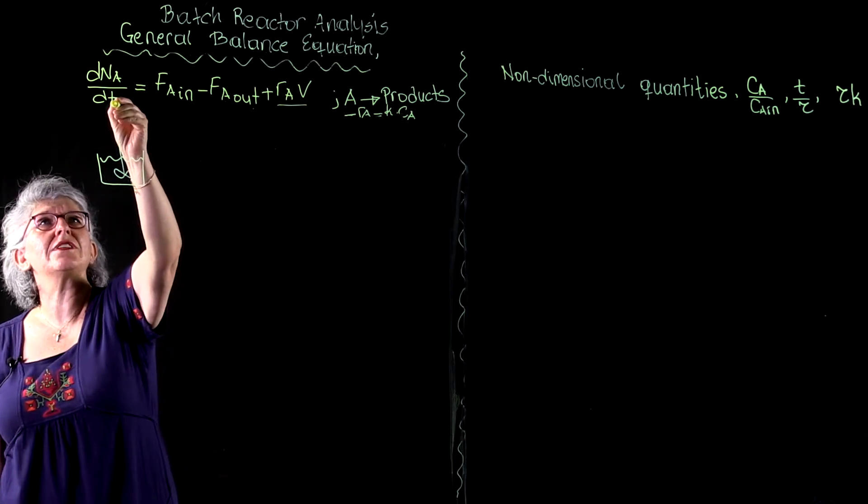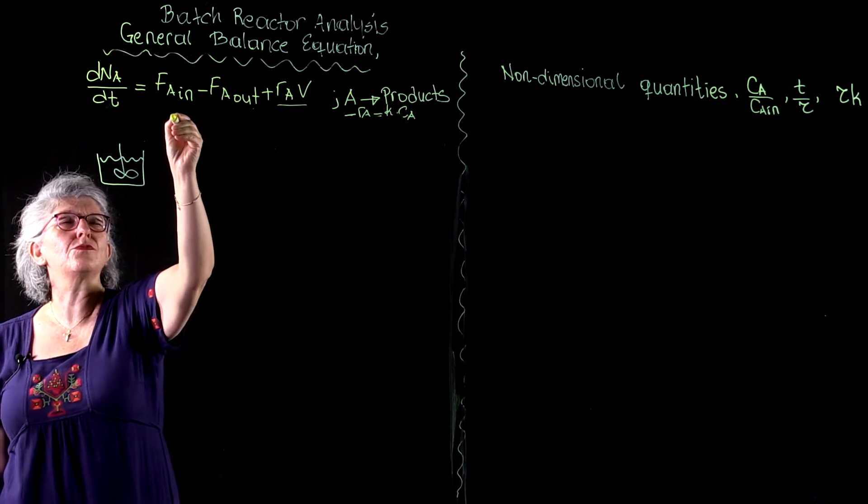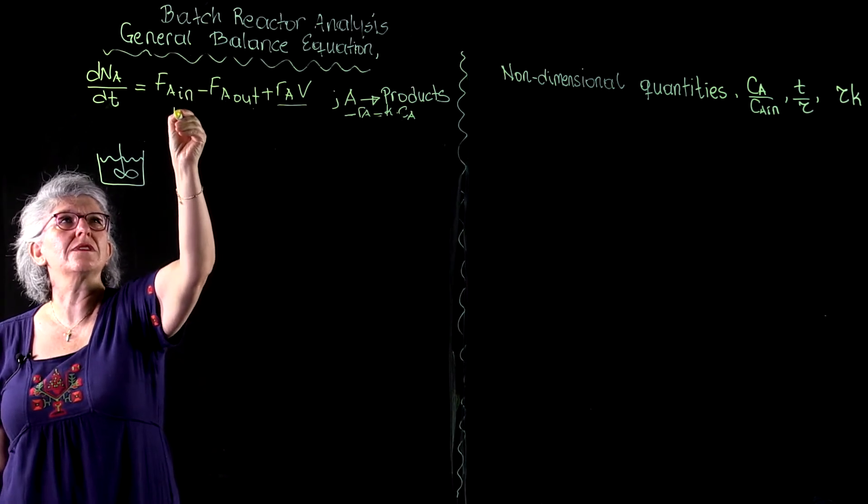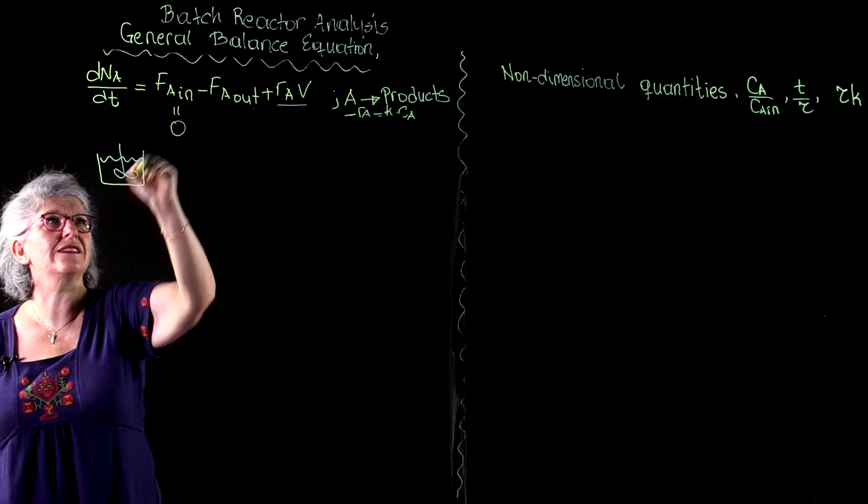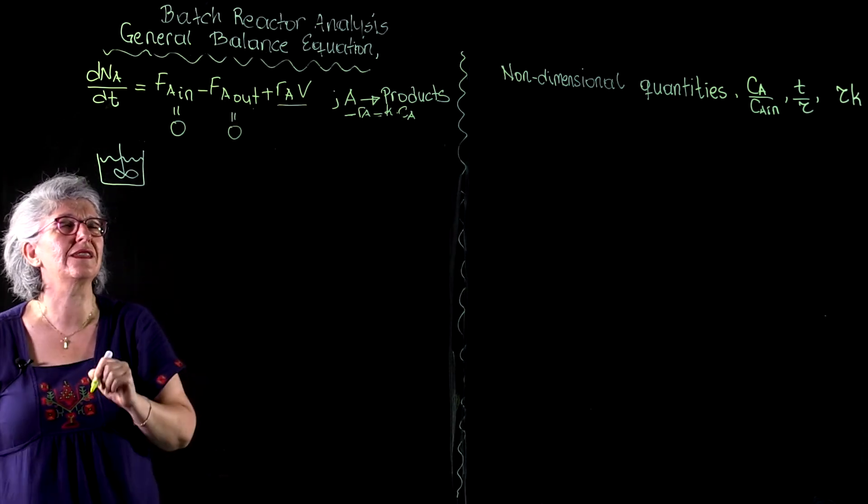And as a result, our general balance equation loses these two terms. This becomes zero for the batch reactor—there is no inlet. This becomes zero for a batch reactor—there is no outlet.